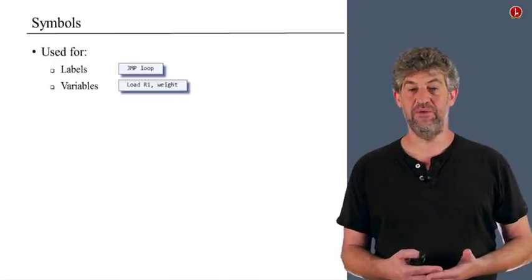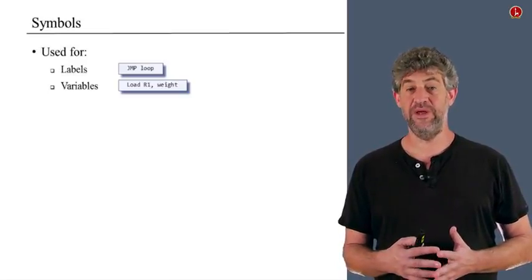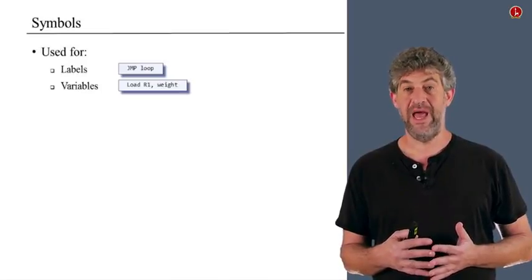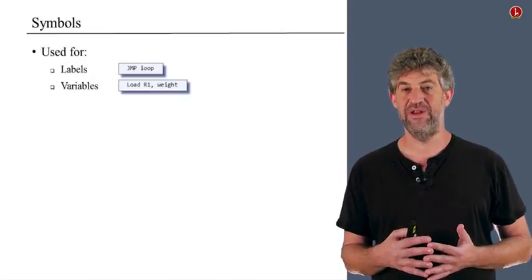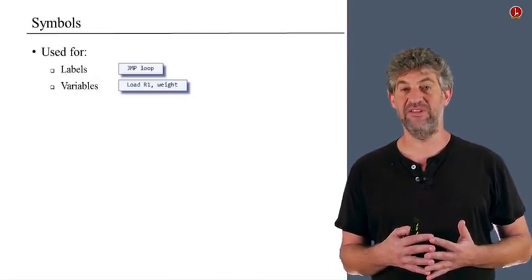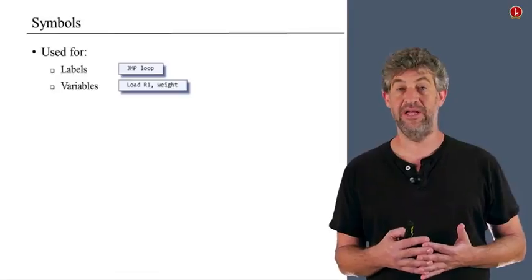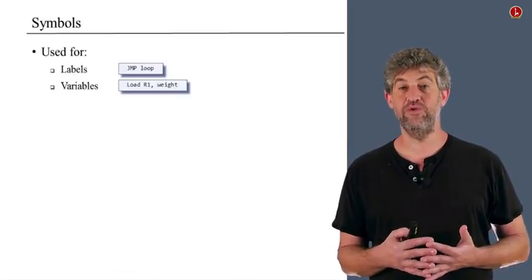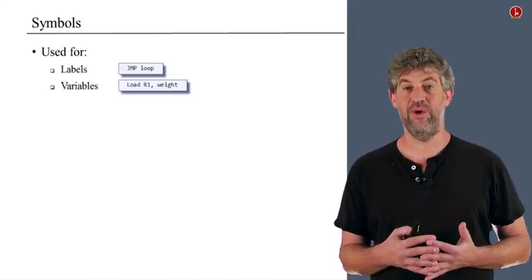So far we've described the basic operation of the assembler. Now there's one extra complication: handling symbols. One of the major services an assembly language gives a programmer is the ability to use symbols rather than direct numbers. We use them for two types of things: labels in the program — so you can jump to a named location rather than hard-coding an address — and variable names, so you refer to a variable by name rather than its exact address in memory.